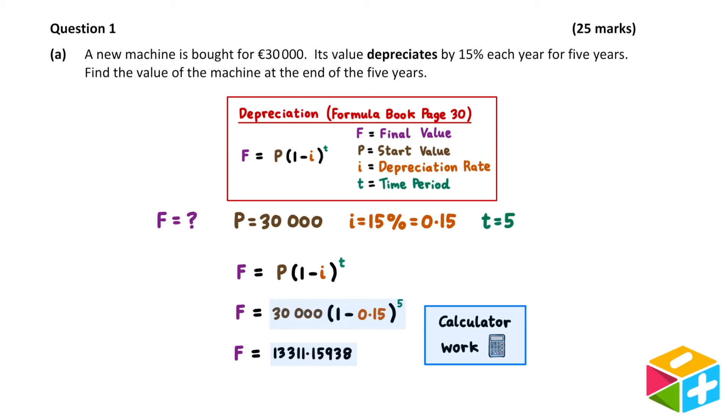From here, we simply need to get out our calculator and do the calculation on the right-hand side. Our answer represents the value of a machine, so the unit here is €. And by convention, we round euro amounts to the cents place, in other words, to two decimal places. So our final answer is €13,311.16.